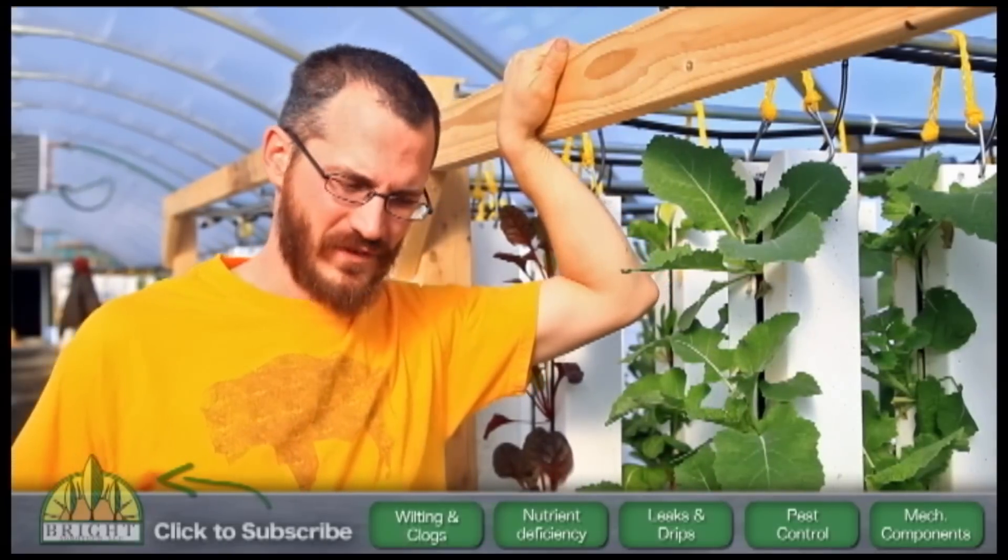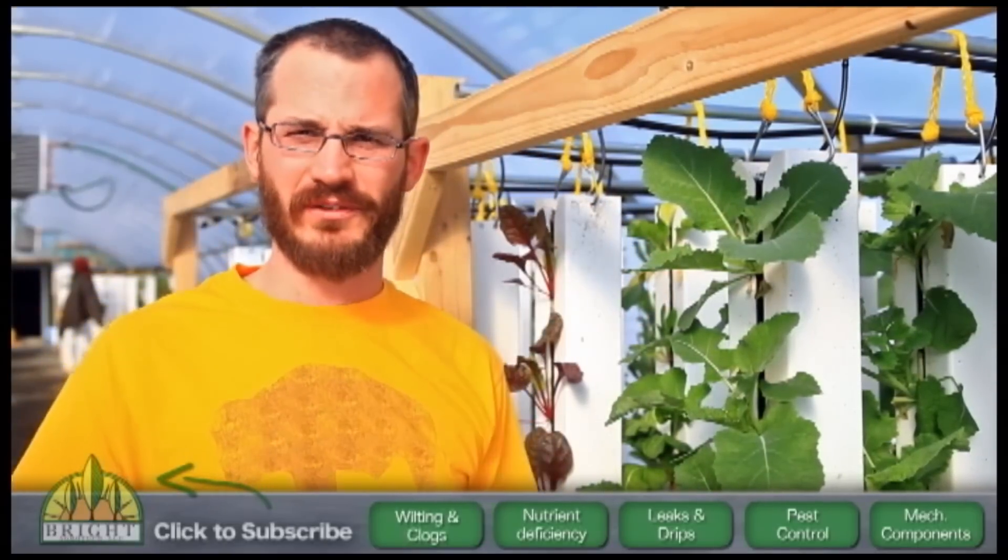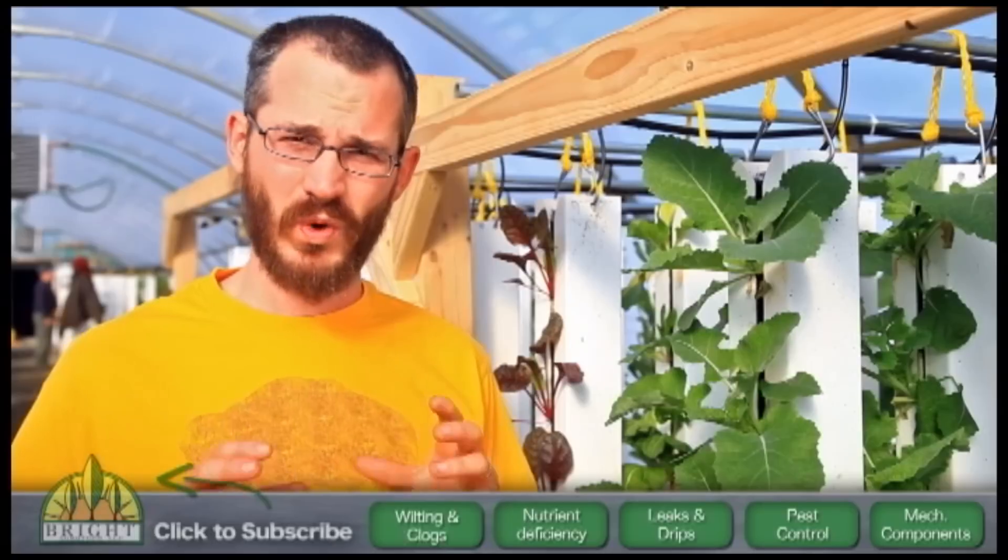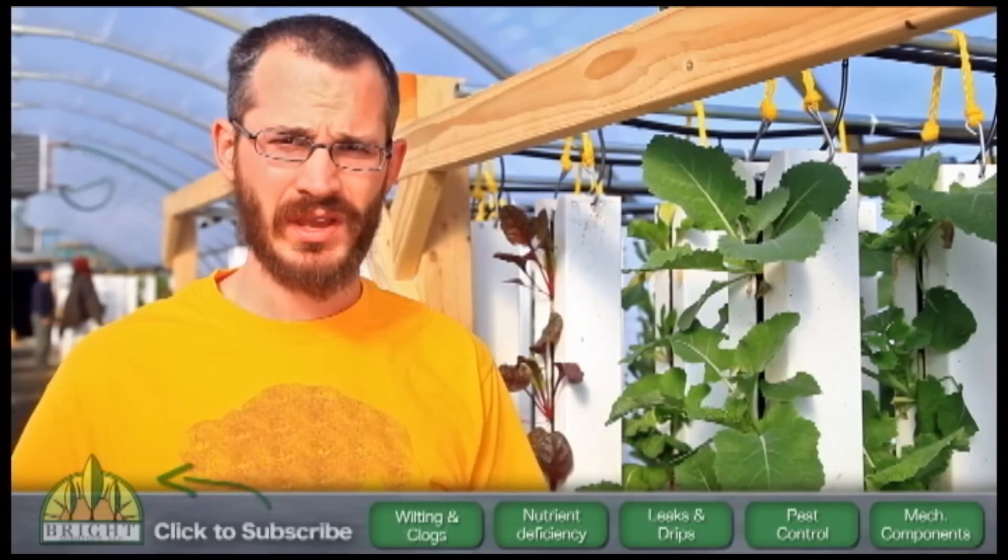Alright, so we've gone through now the different things that we're looking for when you go through the greenhouse, whether it's wilting, some kind of nutrient deficiency, bugs, leaks, mechanical problems. This kind of covers all of the bases for what you need to see on a daily basis in your greenhouse, what you need to be checking on to make sure that your system is running and operating correctly.